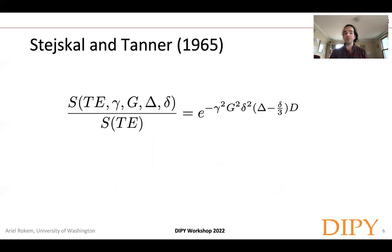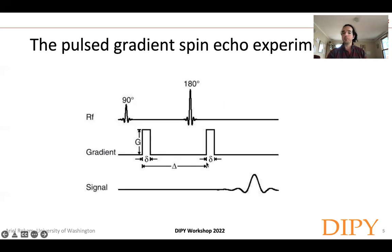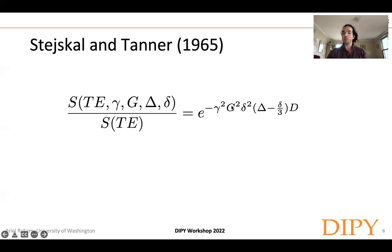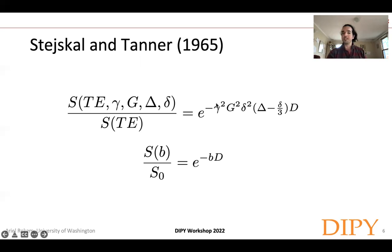Stejskal and Tanner, back in the 1960s, came up with an equation describing signal loss as a function of all these parameters. It is a decaying exponential, e to the minus, involving the temporal difference between the gradients, the duration of the gradient (small delta), the amplitude of the gradient squared, and the gyromagnetic ratio of the proton molecules. D is a single parameter representing the diffusivity of the protons in the sample. Subsequently, all of these measurement parameters were summarized into one number, b, so the Stejskal-Tanner equation boils down to e to the minus b·d.